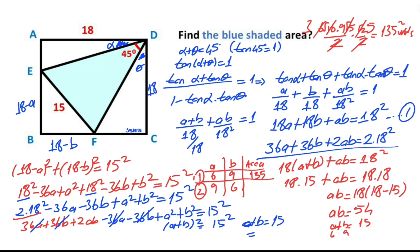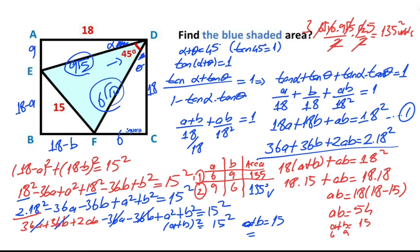For the second case, if a equals 9 and b equals 6, the hypotenuses are 9 root 5 and 6 root 10. Notice that these two sides and the angle are equal to the first case, so the area must be the same — 135 square units.